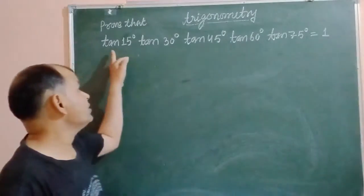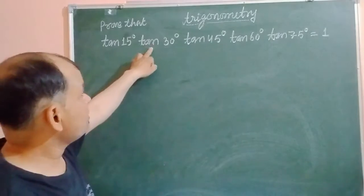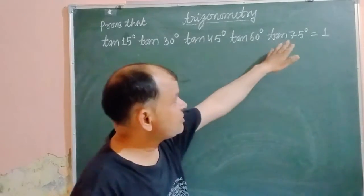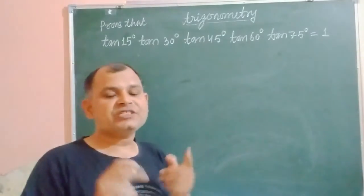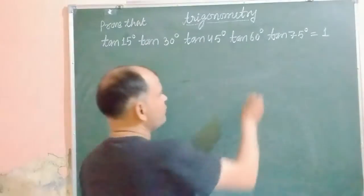So student, in this question we have tan15°, tan30°, tan45°, tan60°, tan75° equal to 1 we have to prove that. So student, first we know a shortcut that if two angles